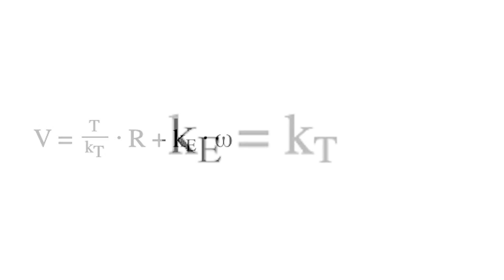For DC motors, the torque constant, k sub t, and the electrical constant, k sub e, are equal and can be replaced with k, the motor constant.